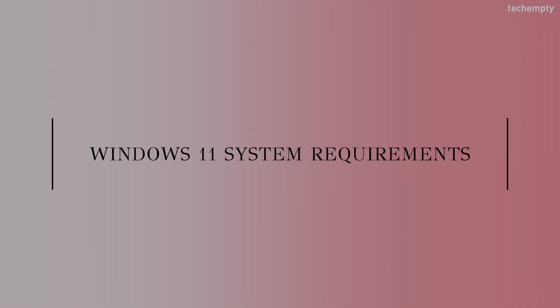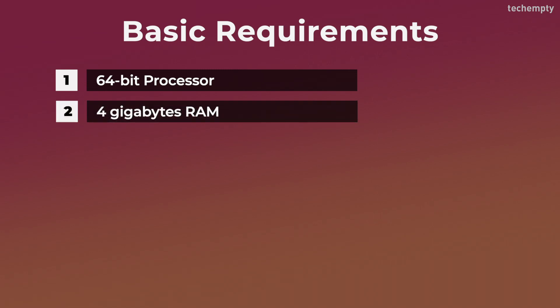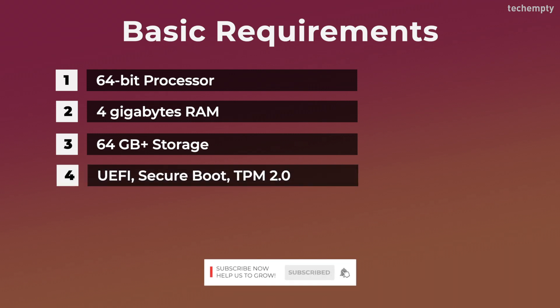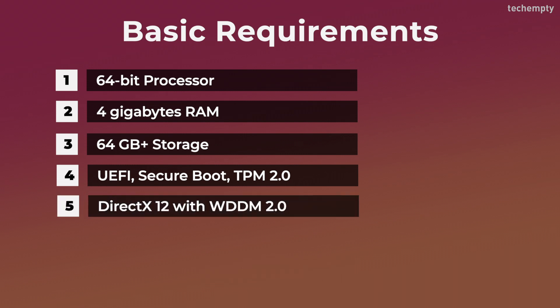Here are the basic system requirements for installing Windows 11 on a PC. If your device does not meet these requirements, you may not be able to install Windows 11 on your device and might want to consider purchasing a new PC. A compatible 64-bit processor, 4GB of RAM, 64GB or larger storage device, UEFI secure boot capable, trusted platform module TPM version 2.0, compatible with DirectX 12 or later with WDDM 2.0 driver.